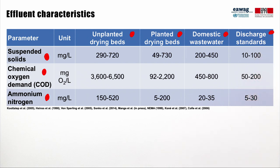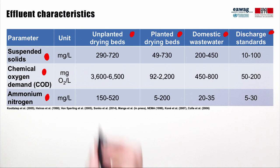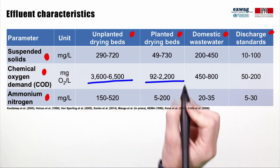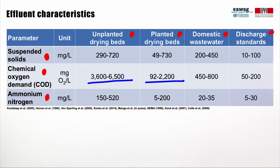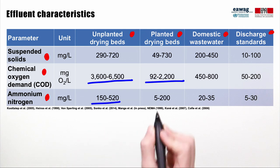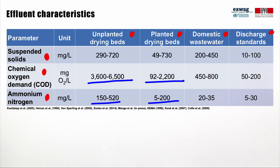There are three main messages that you should take away from this table. Firstly, the effluent concentration can be very different depending on the treatment technology. For example, based on these values, unplanted drying beds were higher in COD and ammonium nitrogen than planted drying beds. This means that the concentration of liquid effluents from different solid-liquid separation technologies needs to be taken into account for the design of effluent treatment technologies.